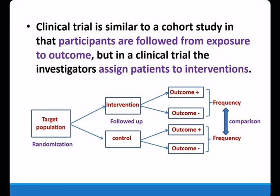Therefore, one starts by determining the eligibility of potential subjects. Eligibility rules must be carefully defined and rigorously applied. Criteria for inclusion will vary by the type and nature of the intervention proposed. Once eligible subjects agree to participate, they are then randomly assigned to one of the study groups.